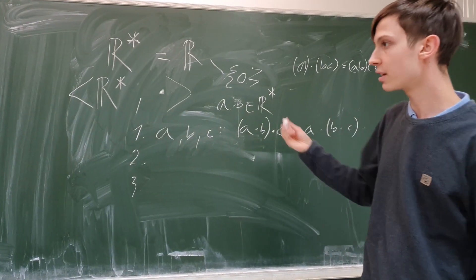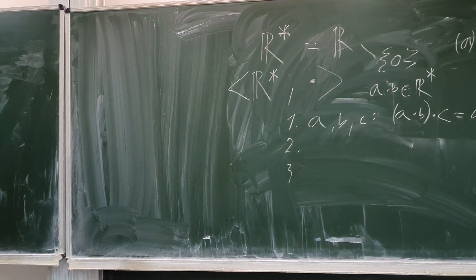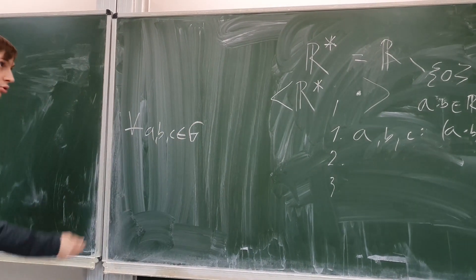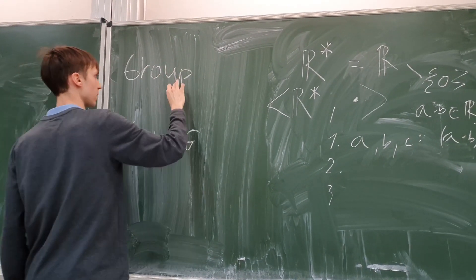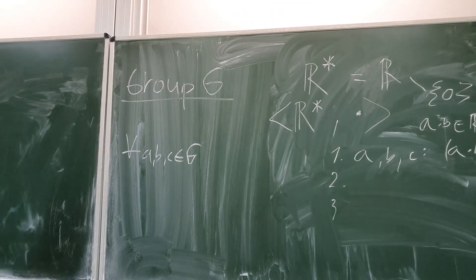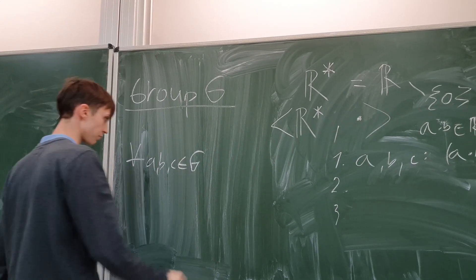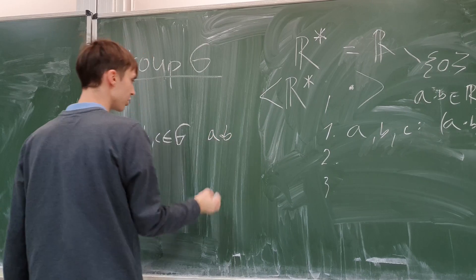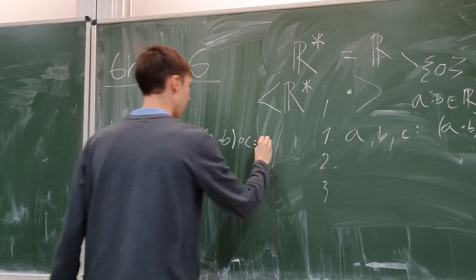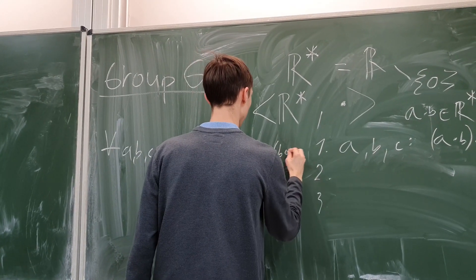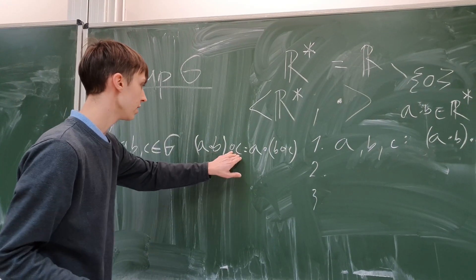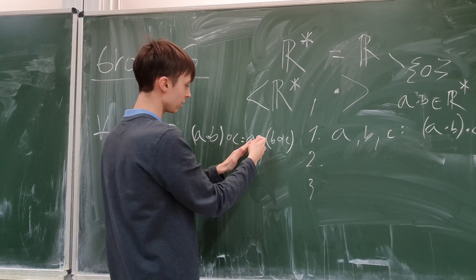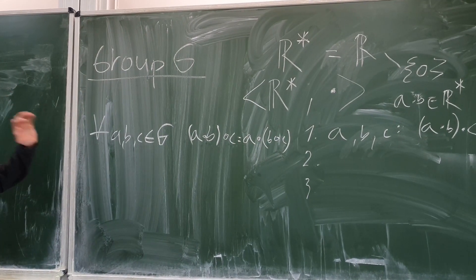In mathematical notation, this can be written as follows: for all A, B, and C in the group G, it holds that (A * B) * C equals A * (B * C). It does not matter if first these two are operated together and then with C, or if A is operated with B and C together. This is called associativity.